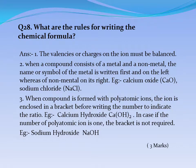Question No. 28: What are the rules for writing the chemical formula? Answer: The valencies or charges on the ions must be balanced. When a compound consists of a metal and a non-metal, the name or symbol of the metal is written first on the left, whereas the non-metal is written on its right. Example: Calcium oxide CaO, Sodium chloride NaCl. When a compound is formed with polyatomic ions, the ion is enclosed in a bracket before writing the number to indicate the ratio. Example: Calcium hydroxide Ca(OH)2. If the number of polyatomic ions is 1, the bracket is not required. Example: Sodium hydroxide NaOH.